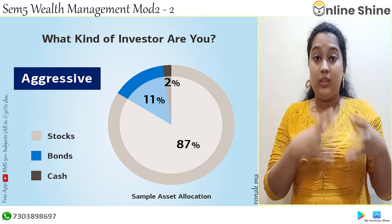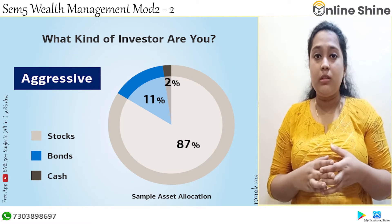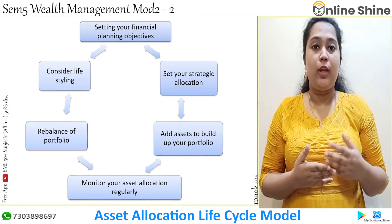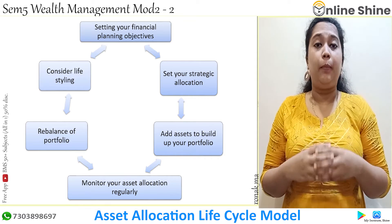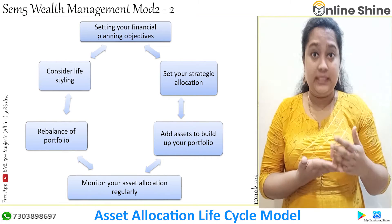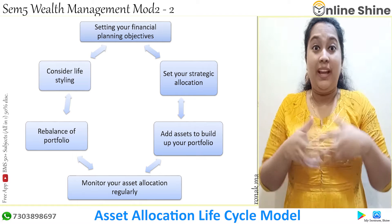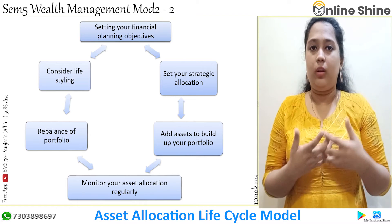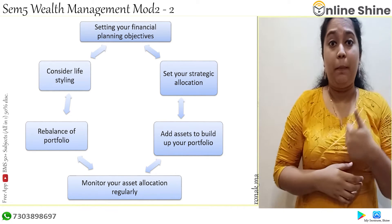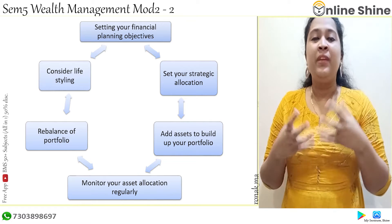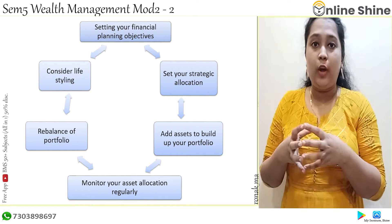So this was the risk profile of investors. Now let us see the asset allocation lifecycle model. This model tells us about how to allocate assets in such a way so that your objectives are fulfilled by getting good returns. The first step is setting goals, or I can say setting your financial planning objectives.